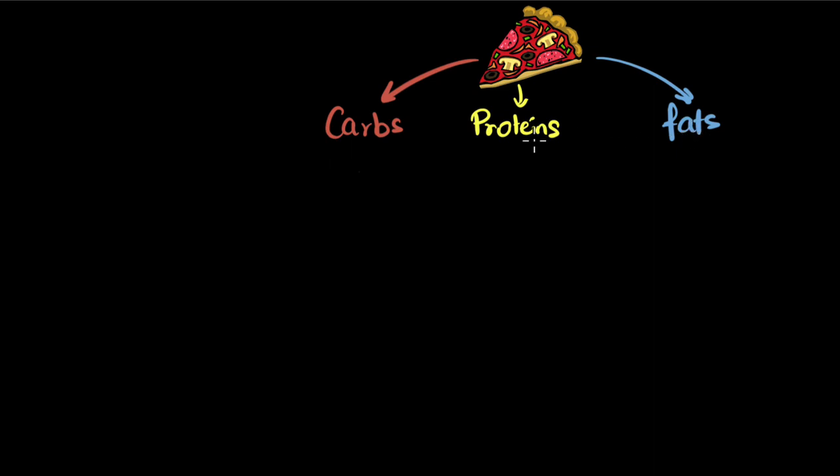Digestion is breaking them down into their tiny components. What are those components? Well the component of carbs is basically glucose. The component of proteins, proteins are made up of amino acids and the components of fats is basically fatty acids and glycerol.